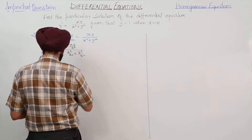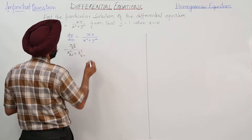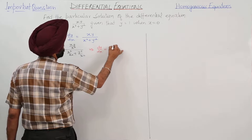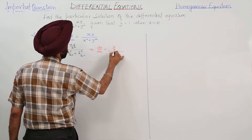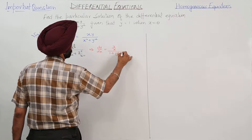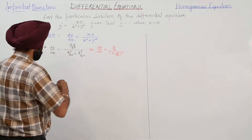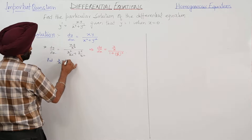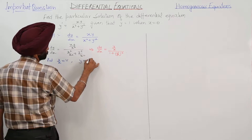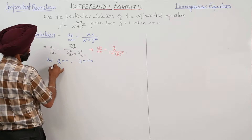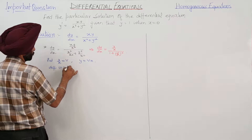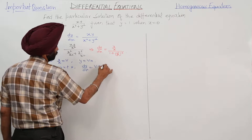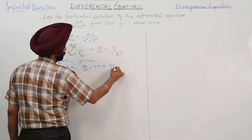This converts to a homogeneous equation. Now what we are getting is dy/dx = (y/x) / (1 + (y/x)²). Now put y/x = v, so y = vx. Differentiating with respect to x, dy/dx = v + x·(dv/dx).